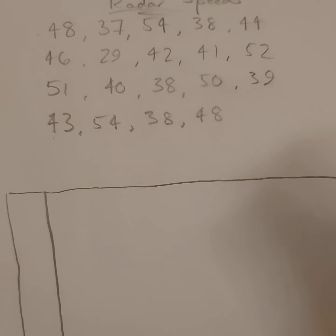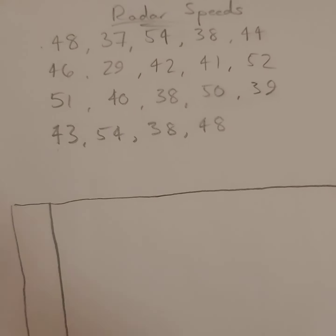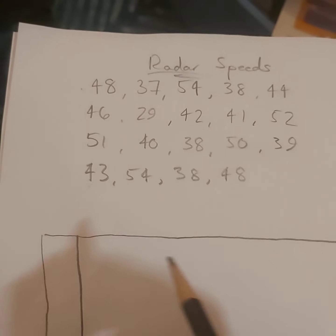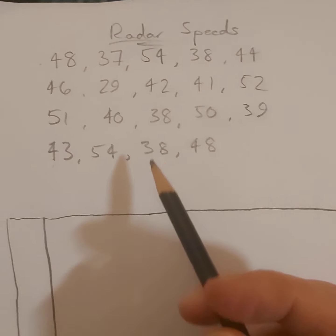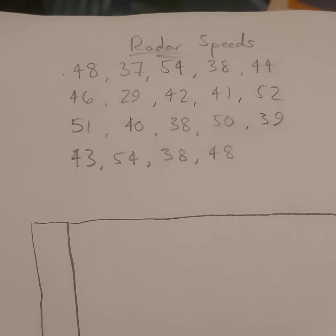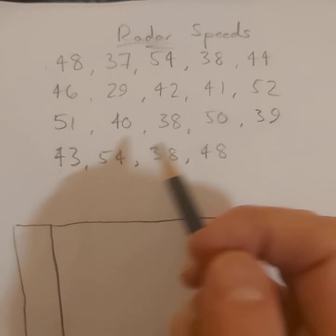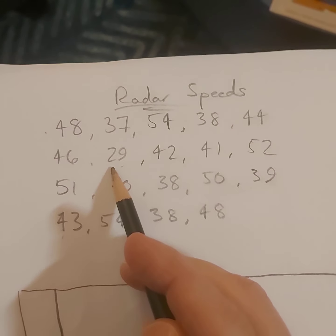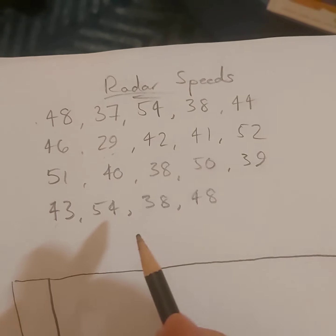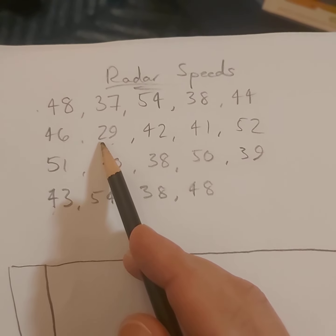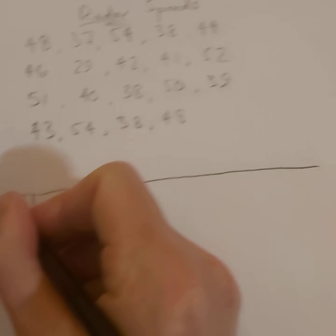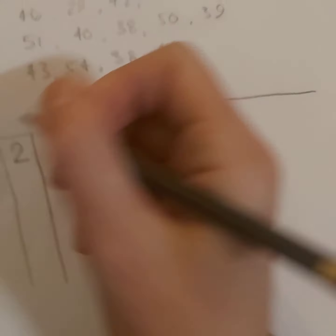Because we're dealing with speeds, they're all going to be double digits — we don't see anyone driving less than 20 kilometers an hour. Looking at the list, I find the lowest number: 29, which is the only number with a two in the tens column — the only number in the 20s. So I'm going to put a two as my first stem.